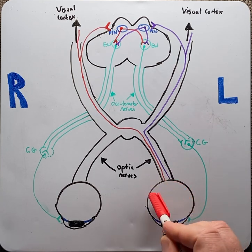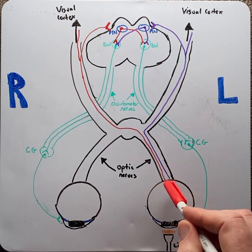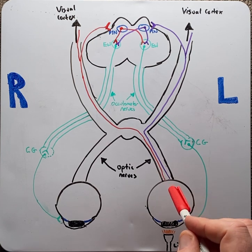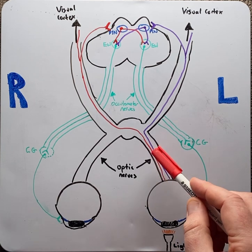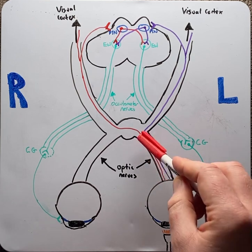Here the light will hit the back of the eye where the retinal cells are, and these retinal cells will convert the light energy into electrical activity. This electrical activity will be taken back to the brain via the optic nerve, which is the second cranial nerve, specifically the left cranial nerve.